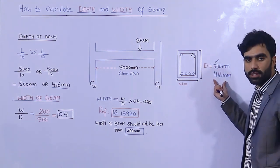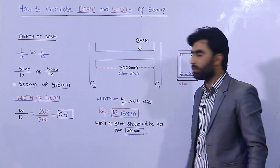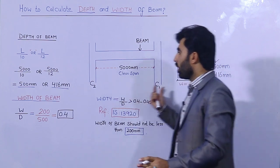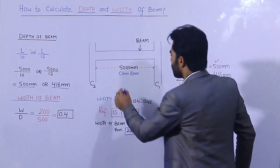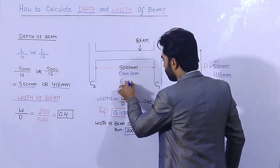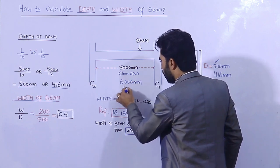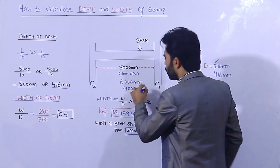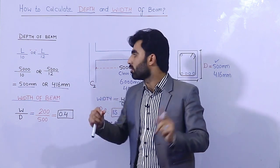500mm is better because the factor of safety is very important in civil engineering, especially for any kind of structure. This is the formula to find the depth of a beam. If the span is 6000mm or 4000mm, you can use the same thumb rule formula.